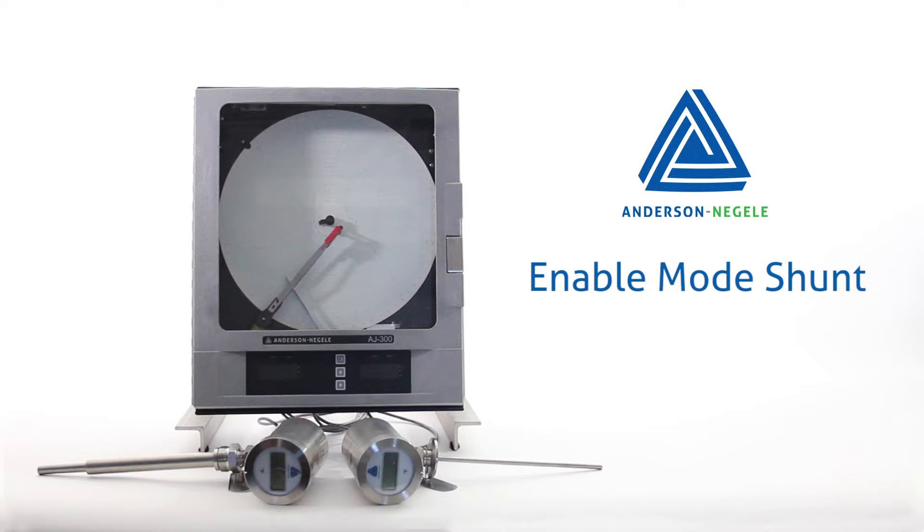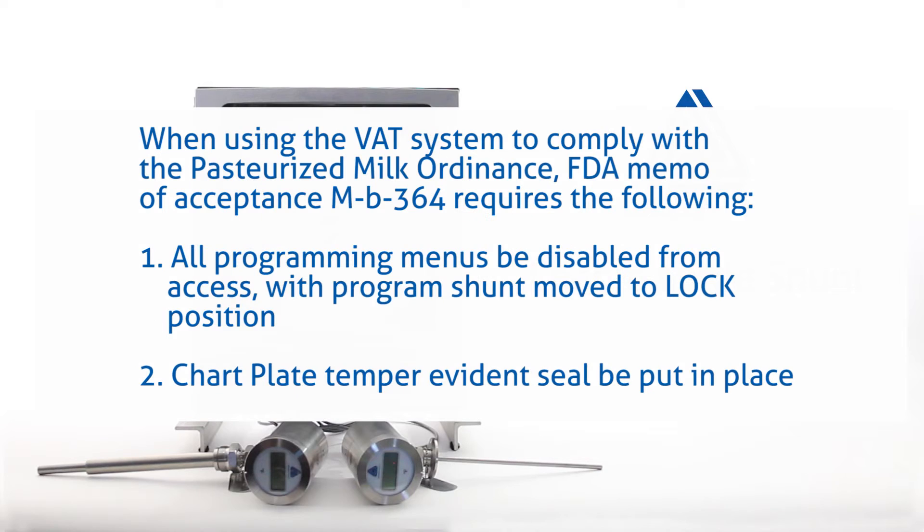Now we're going to discuss the enable mode shunt and its functionality. When using the VAT system to comply with the pasteurized milk ordinance, FDA memo of acceptance MB364 requires the following.